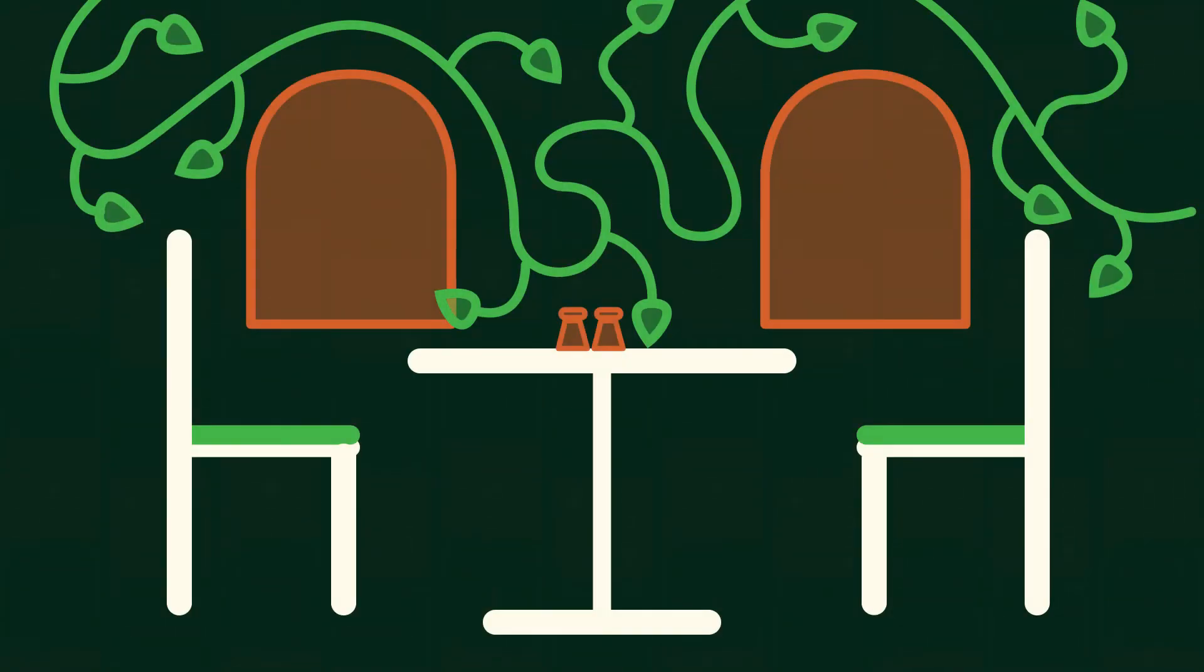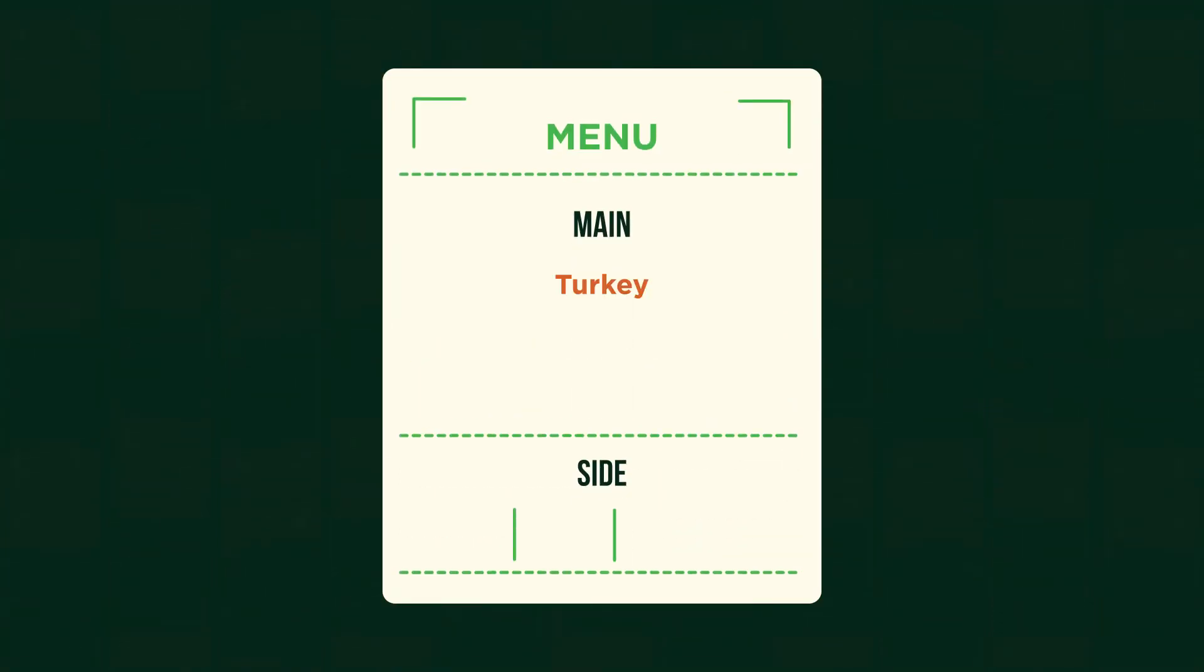Now imagine yourself at a restaurant where you have the choice of turkey, beef or pasta for main, with the option of chips, salad or vegetables on the side.